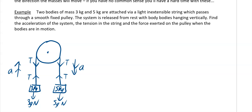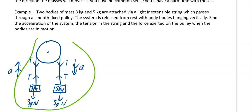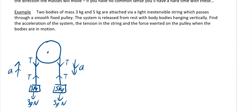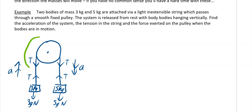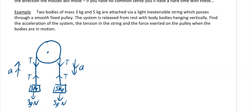If you look at the system as a whole, you consider everything together. If you're looking at just the three kilogram mass, you consider only those forces. If you're looking at the five kilogram mass, just those forces. Very importantly — and this does come up — if they ask about the force on the pulley, there are two tension forces T and T, so the force on the pulley is 2T. You need to be able to look at the system as a whole and then at individual components.